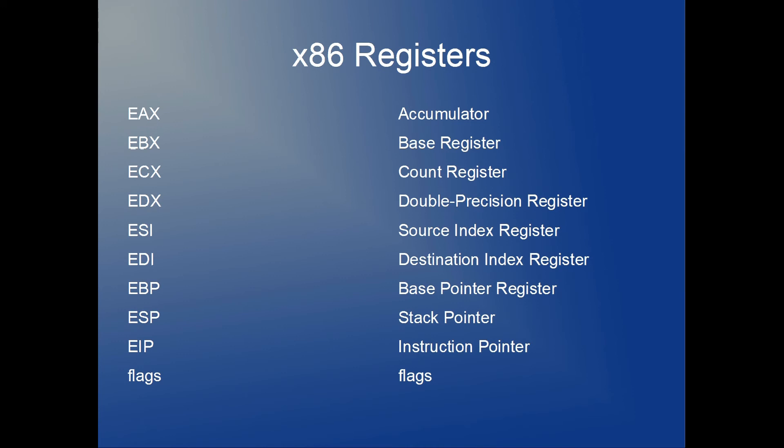We have the EDX register, known as a double precision register; the ESI register, known as a source index register; the EDI register, known as the destination index register; EBP, the base pointer register; ESP, the stack pointer; EIP, which stores the instruction pointer — the location of the current instruction to be executed by the processor; and finally the FLAGS register, which is a collection of bits indicating particular outcomes of an operation.